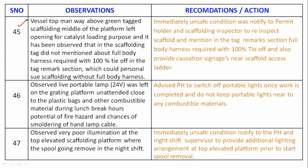Observation 45: At the vessel top manway, above a green-tagged scaffolding middle platform with an opening left for catalyst loading, it was observed that the scaffolding tag did not mention that a full body harness with 100% tie-off was required in the tag remarks section, which could allow personnel to use scaffolding without full body harness. Recommendation: Immediately notify the permit holder and scaffolding inspector to re-inspect the scaffold and mention in the tag remarks section that full body harness with 100% tie-off is required, and also provide caution signages near the scaffolding access ladder.